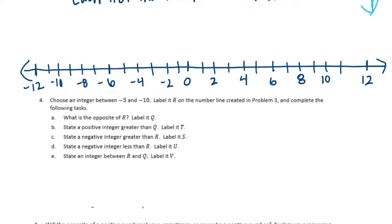Number 4: choose an integer between negative 5 and negative 10, label it r on the number line from problem 3. Negative 5 is right here and negative 10 is right here, so I'm going to choose negative 8 and label it r. The opposite of r: we move 8 to get to 0, then move 8 more in the opposite direction, which gets us to 8. So label that q. The opposite of r is 8.